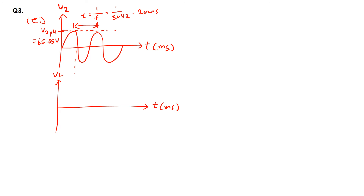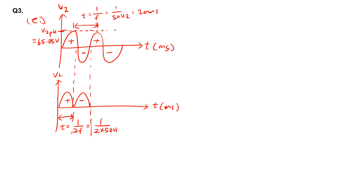For VL versus time over two cycles, in a full-wave rectifier system, both the positive and negative half-cycles of V2 are reflected across the load resistor. The period for VL is 1/(2F) = 1/(2 × 50 Hz) = 10 milliseconds. The peak of VL is VL peak = 63.65V. That concludes Question 3.